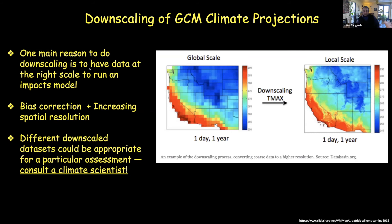Downscaled data is available at multiple different spatial and temporal scales, so a choice needs to be made. The downscaling process itself also differs — there are dynamical downscaling and statistical downscaling, and different kinds of statistical downscaling. I won't go into that today as it could take one or more sessions on its own. But it's a good idea to talk to a climate scientist to understand what data is appropriate to use.